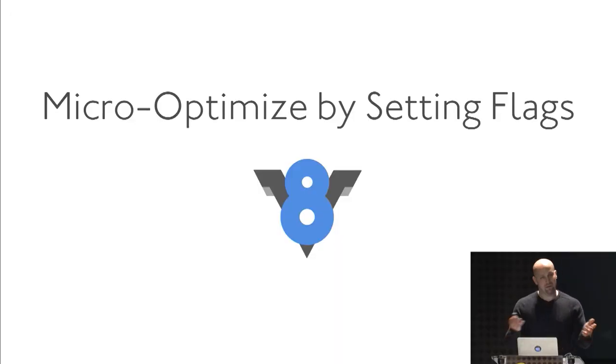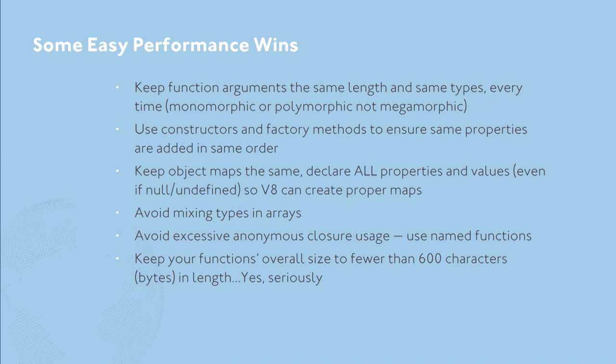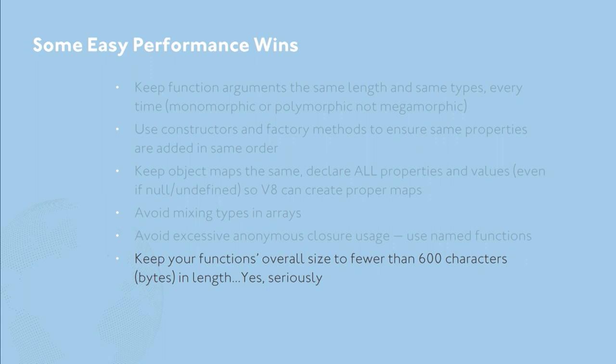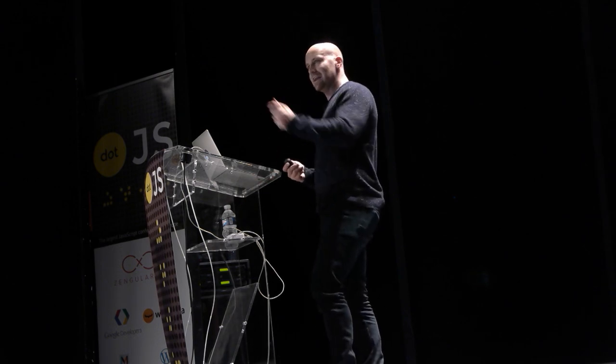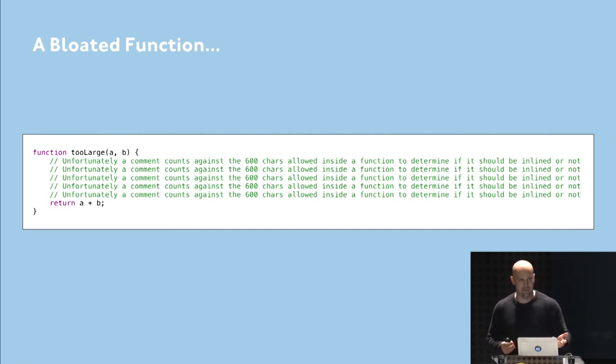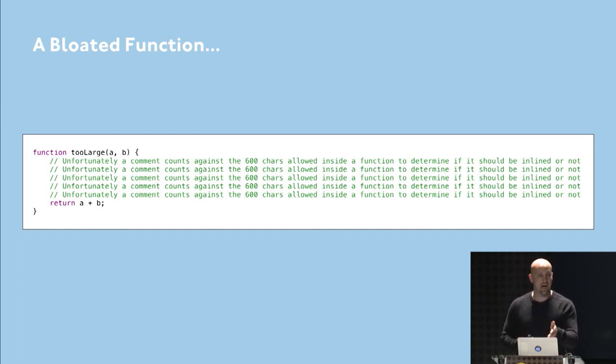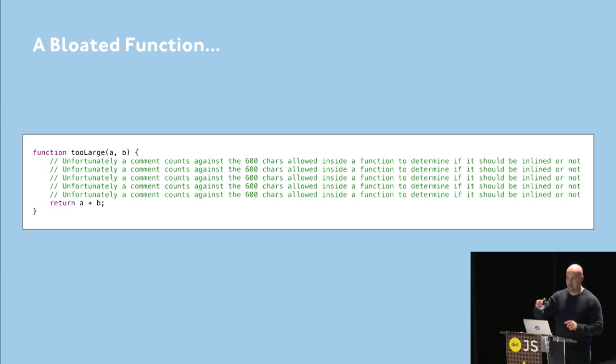Now that we have a general idea of a foundation for how to write efficient JavaScript for Node applications, we can take the next level up — and that's by micro-optimizing by setting certain flags in V8. Going back to that list of performance wins, there's that last one: keep your functions overall size to fewer than 600 characters. Why 600 characters? What if I had a bunch of functions that were 601 or 700 characters? How can I make V8 change to then inline those functions? Well, we can actually do this. If you take a look at this function — very simple, takes two parameters and returns their sum — unfortunately there's a ton of comments in there that make it a bloated function, and it's actually more than 600 characters. Yes, comments actually count against that character count. So what we want to do is make a modification to V8 so that the 600-character length is actually increased to cover this. We'll show a quick demo of how that works.